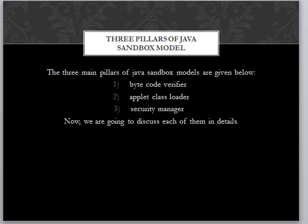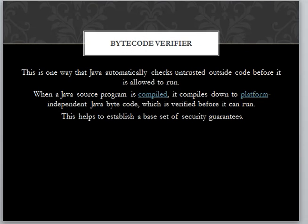The first main pillar is the Java ByteCode Verifier. Java source code is compiled and changed into ByteCode before it is run. The ByteCode Verifier verifies the ByteCode and provides a security guarantee that there are no errors in the ByteCode.